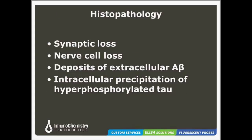There are several hallmark pathological characteristics of Alzheimer's disease: synaptic loss, nerve cell loss in the cerebral cortex, hippocampus, and amygdala, extracellular deposits of amyloid beta protein that form senile plaques, and the intracellular precipitation of hyperphosphorylated tau proteins that form neurofibrillary tangles inside the nerve cells.